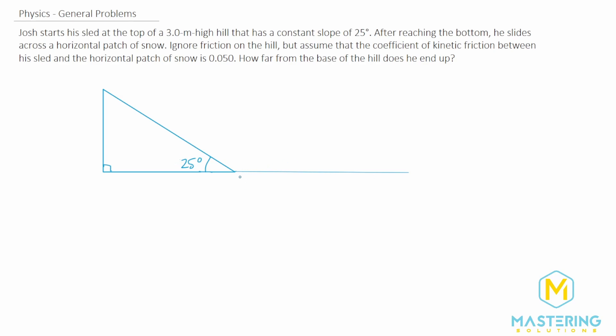So right here to here is 0.050. And we need to figure out from the base of the hill all the way over here how far does he end up. So this delta x right there.